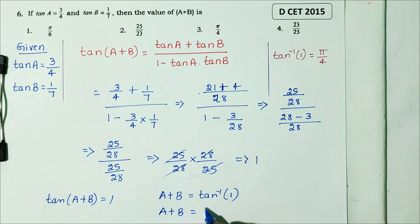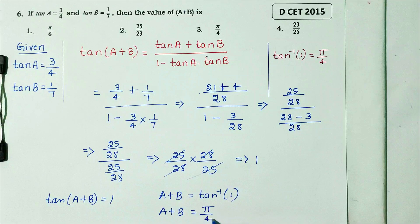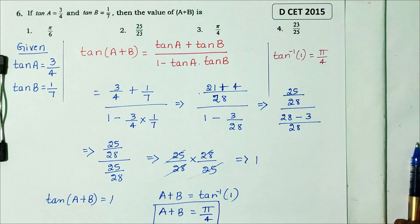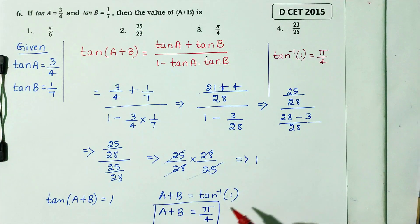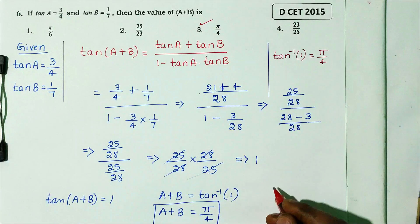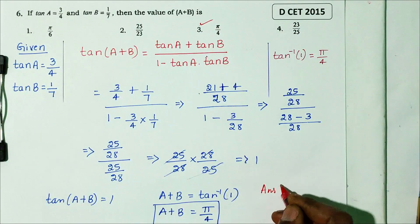Tan inverse 1, in terms of radians, is pi by 4. So A plus B equals pi by 4. Looking at the options, the answer is pi by 4, which is option one. That is the correct answer.